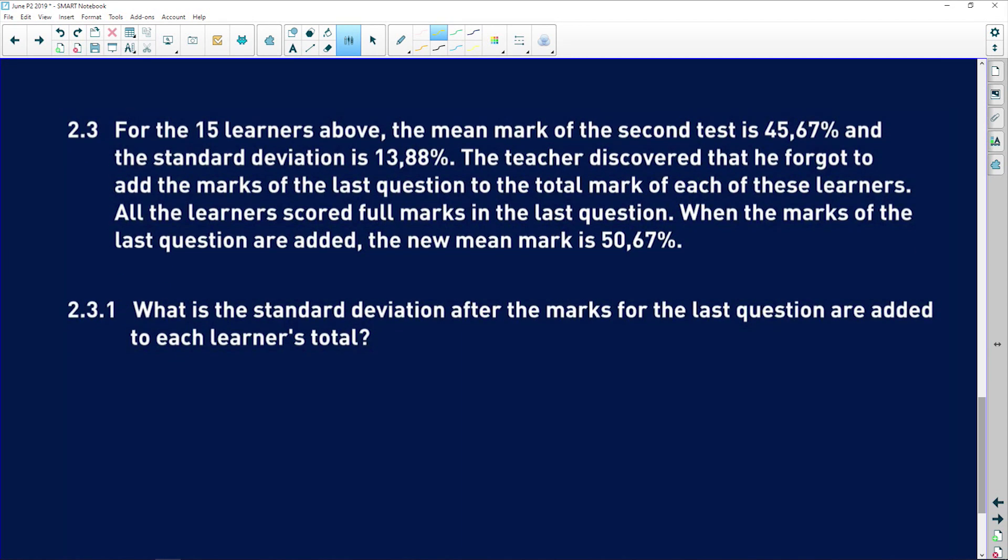So 2.3 now says for the 15 learners above, the mean mark of the second test is 45,67%, and the standard deviation is 13,88%. Luckily for you, they didn't make you calculate this. They gave it to you themselves. The teacher discovered that he forgot to add the marks of the last question to the total mark of each of these learners. All of the learners scored full marks in the last question. That full marks means that every single learner got the same mark. Let's call it Z. They got exactly the same mark for that last question. So when the marks of the last question are added, which means that we're adding the exact same mark every time, the new mean mark is 50,67%.